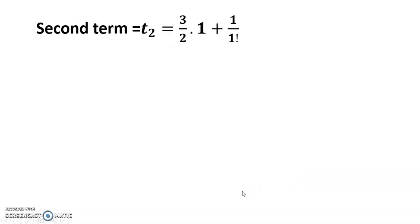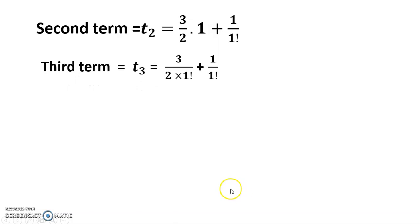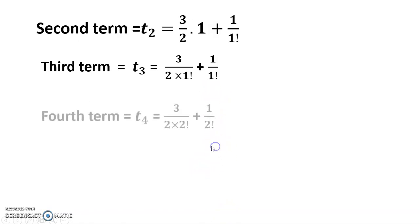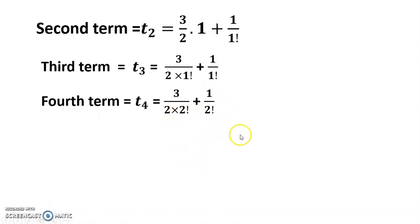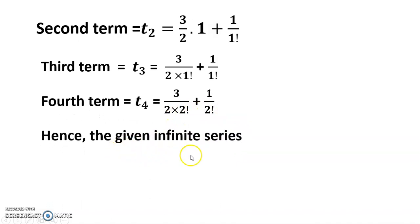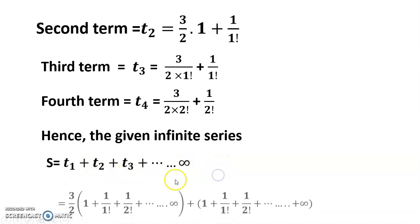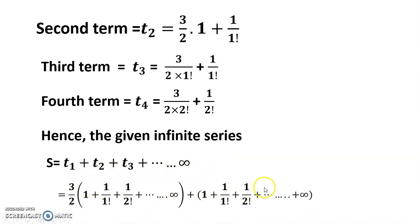The first term t1 = 0 + 1, the second term t2 = 3/2 + 1·(1) + 1/(1!), and the third term t3 = 3/2 + 1·(1!) + 1/(1!). The fourth term t4 follows the same pattern. Hence the given infinite series t1 + t2 + t3 + ... up to infinity can be arranged by taking 3/2 as a common factor.